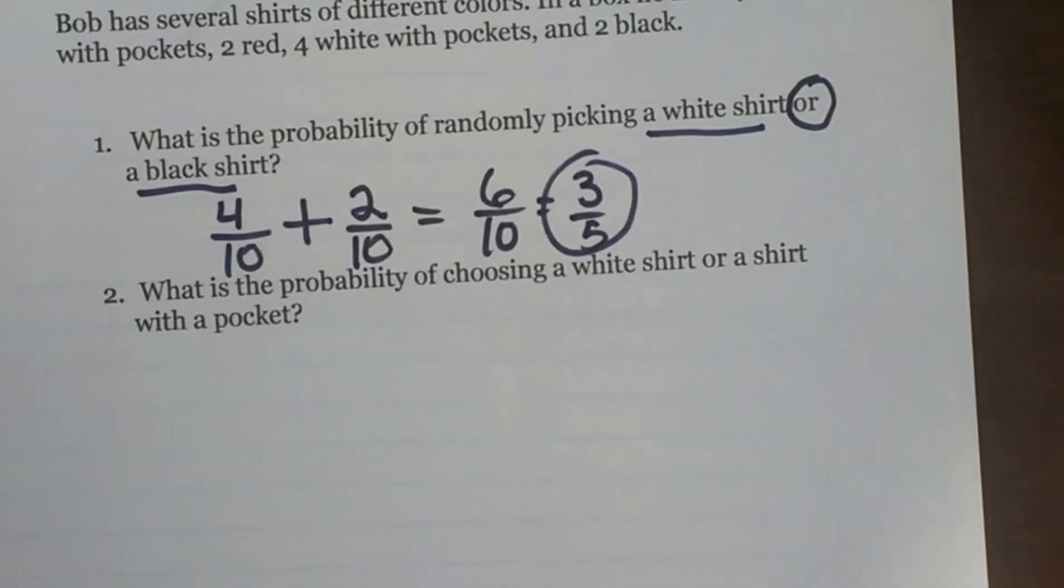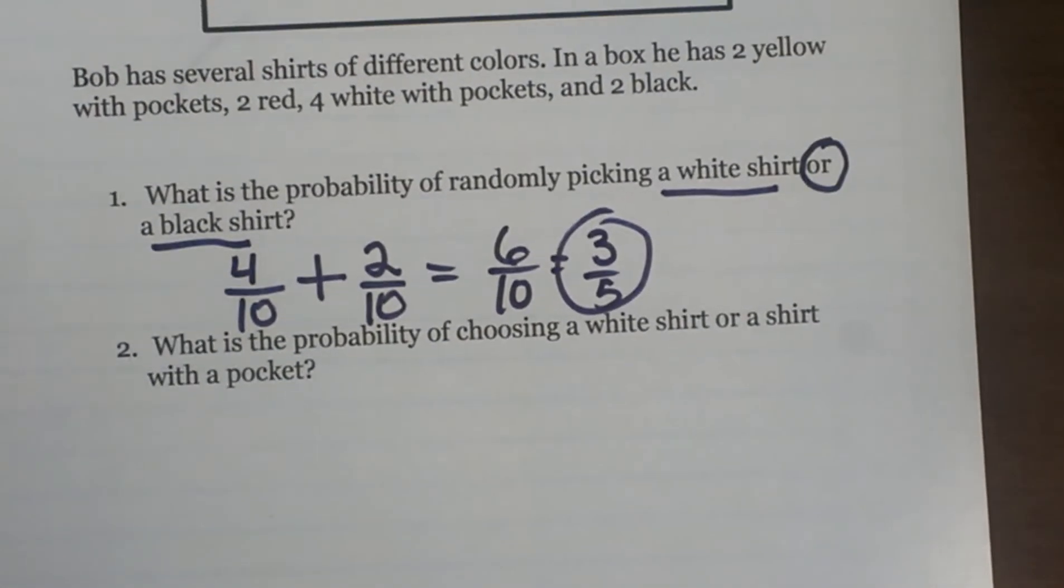Now let's look at one that has a little bit of overlap. Okay, so now we are going to look at what is the probability of choosing a white shirt or a shirt with a pocket. Okay, so we have our two probabilities again.